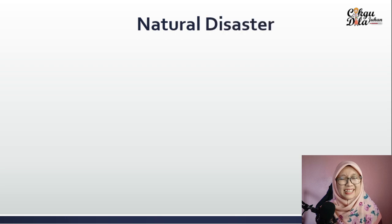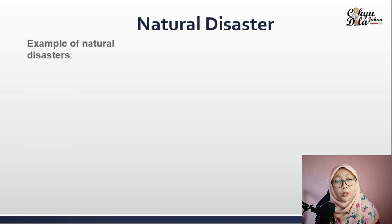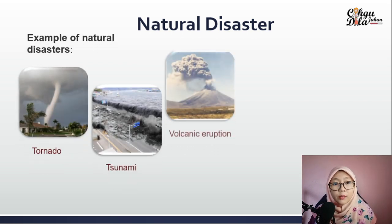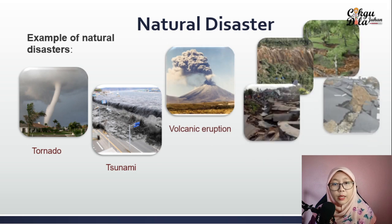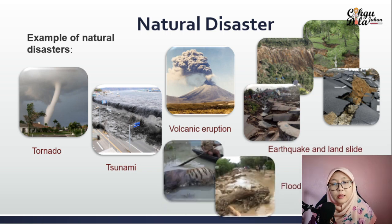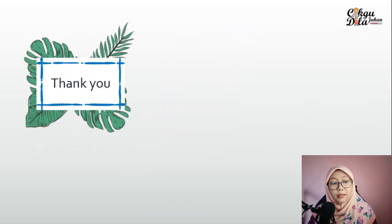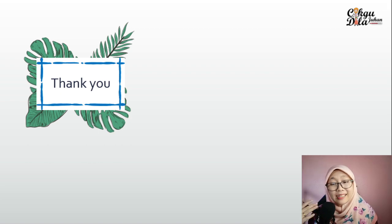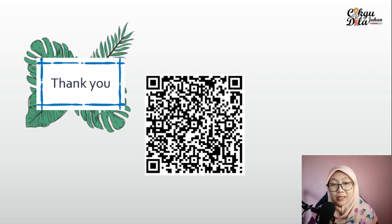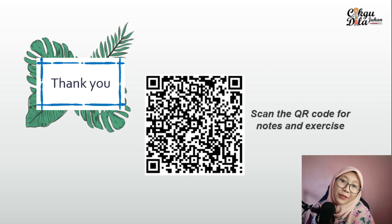The last factor is natural disasters. Examples include tornadoes, tsunamis, volcanic eruptions, earthquakes, landslides, and floods. When these natural disasters happen, they also affect plant and animal species, and humans as well. Those are some of the reasons why animals and plants face the threat of extinction. You can scan the QR code to get more notes and exercises. Remember to like and subscribe.